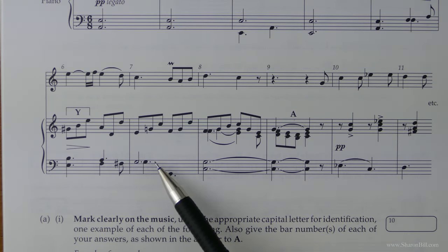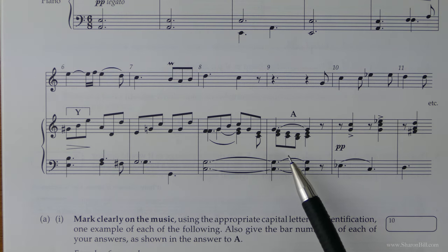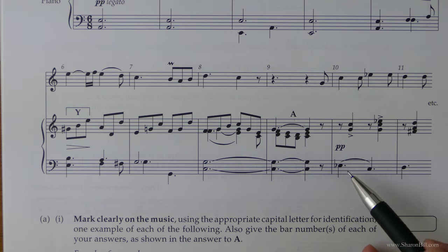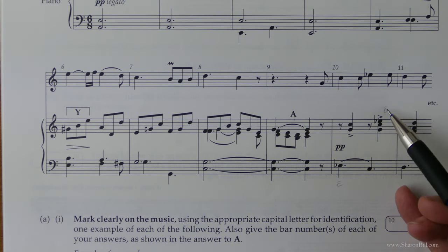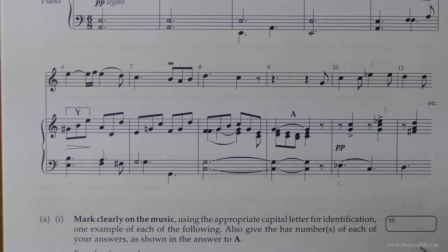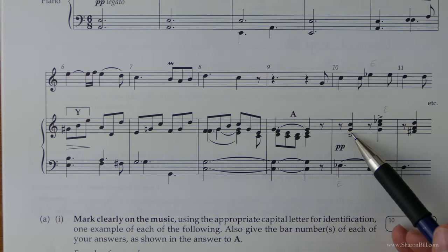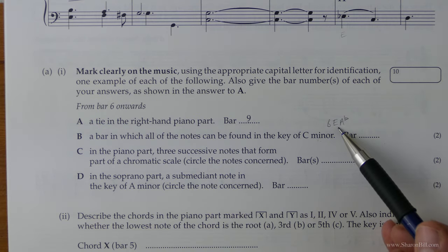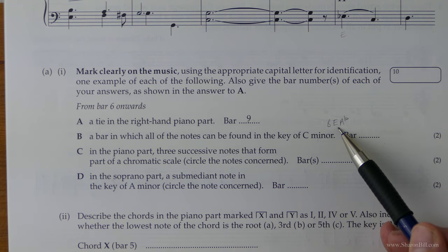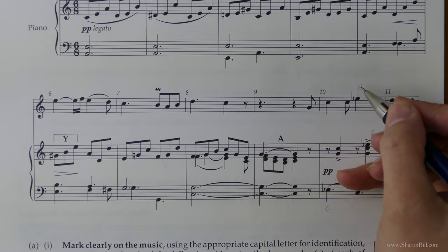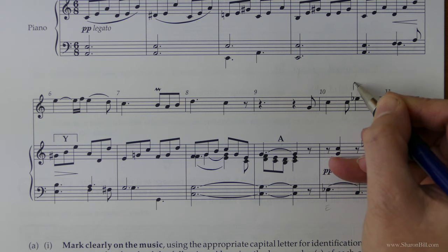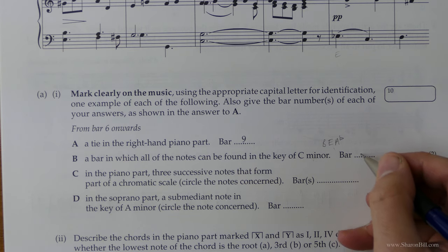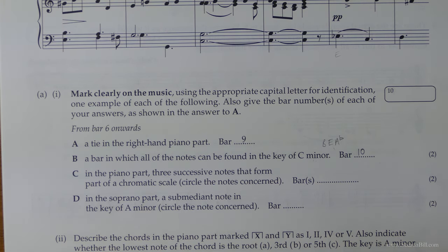So none of that will do. Keep going. It must be somewhere. And here we are. This looks like a promising bar. We have an E flat here. We have an E flat here. We have an E flat here. There are no B's or A's to be flattened, and so we can explain that E flat as part of C minor. And so we can write that this is the answer to B, and we will say bar 10. So that's nicely dealt with.